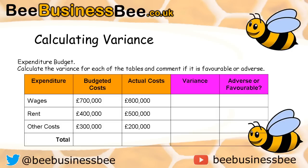Try to do the same for rent and other costs. For the total row, total them all up and then calculate the variance for the total column — is it adverse or favourable? You may want to pause the video while you complete that activity and discuss it as a group. I've got a worksheet on my website you can download and calculate it all yourself.